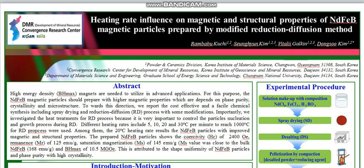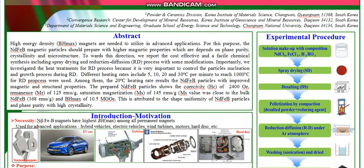This work investigates the heating rate influence on magnetic and structural properties of NdFeB particles prepared by a modified reduction-diffusion (RD) method. The prepared NdFeB particles showed a coercivity of 2400 Oe, MR of 125 EMU, and a saturation magnetization value of 145 EMU/g, from which the calculated BHmax is 10.5 Megagauss-Oersteds.